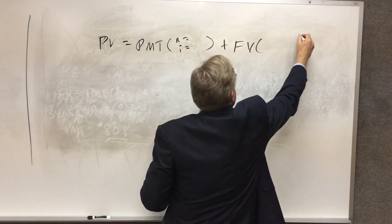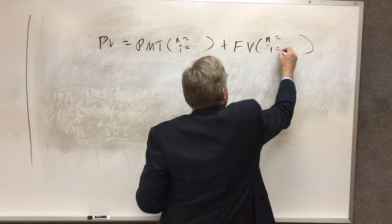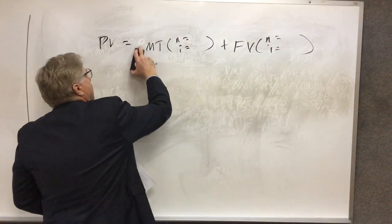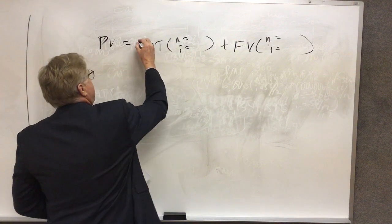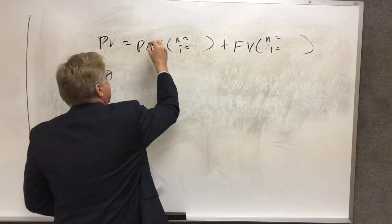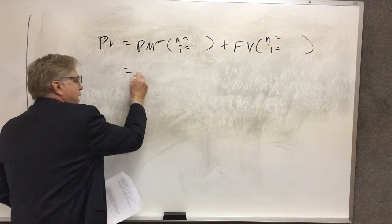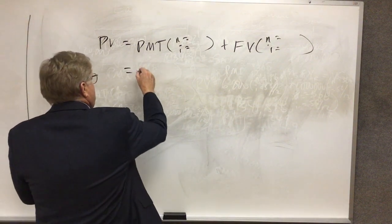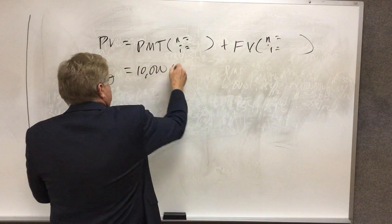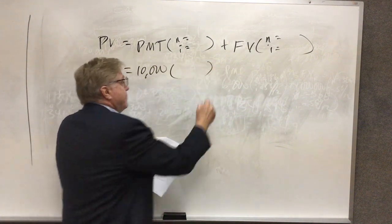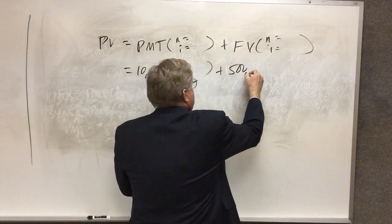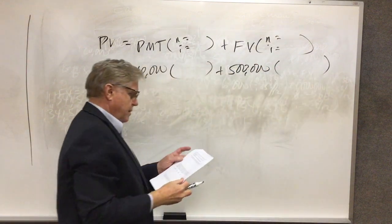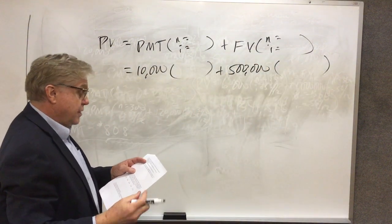So we have here a payment scheme that involves an annuity and a lump sum. We will see this again later when we deal with corporate bonds. That annuity is $10,000 per period plus $500,000 at the end. The n is 20 years.